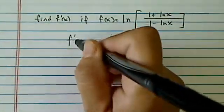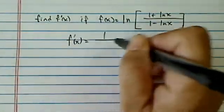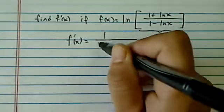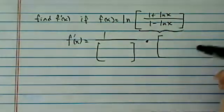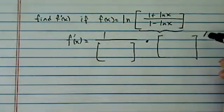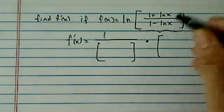We have a natural log here, so f' is equal to 1 over whatever this big bracket is. We're going to put it in here. Okay, let's set it up first. And then whatever this bracket, derivative of this whole bracket.